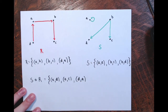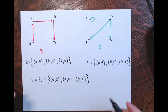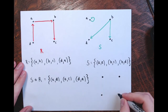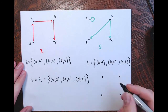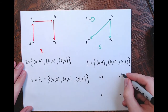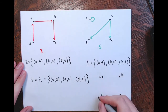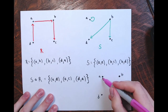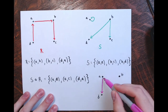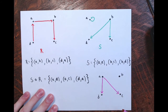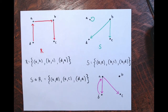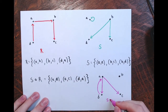So S∘R contains the ordered pairs: (A,D), (A,C), and (D,A). Here's the directed graph for S∘R — set A with elements A, B, C, D — with arrows: A to D, A to C, and D to A.